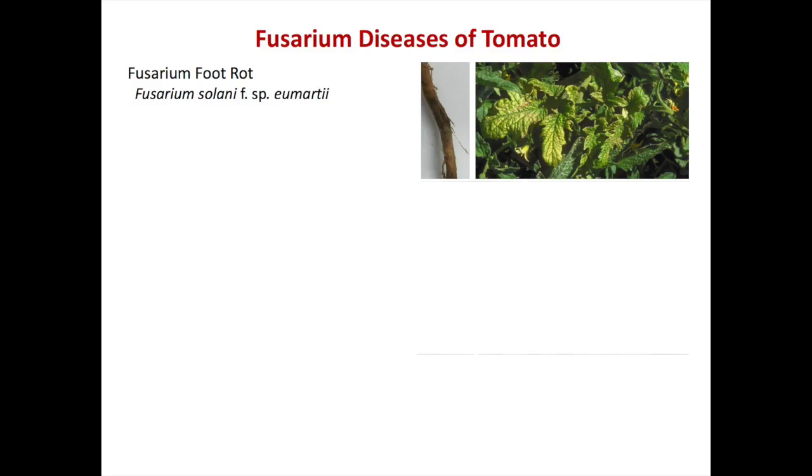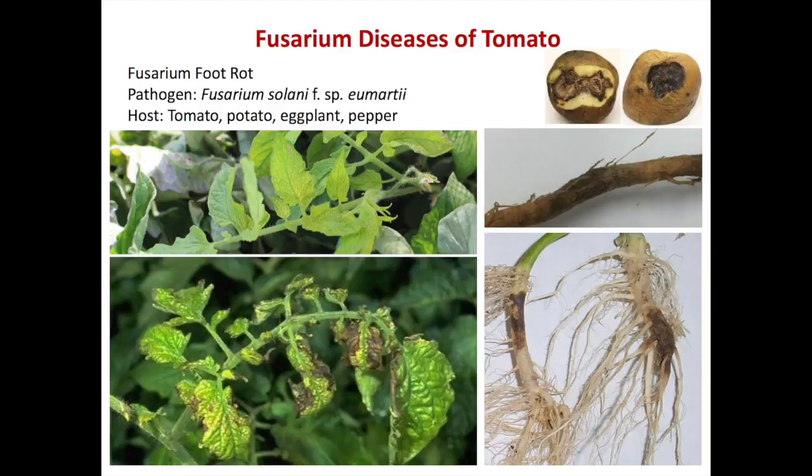For fusarium foot rot, you have a single branch that has interveinal chlorosis, and necrosis — the plants are kind of weak, but they're not dead, they're just stunted. You have a lesion on the foot, on the taproot, and that's distinctive of fusarium foot rot.